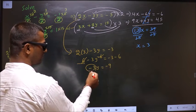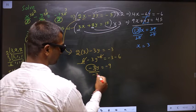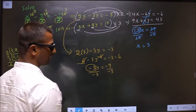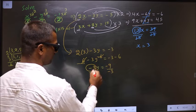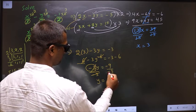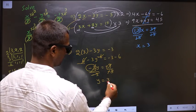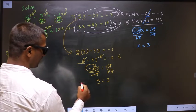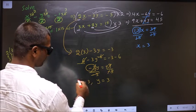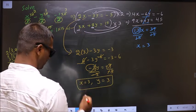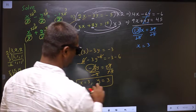So now to get y, I should remove minus 3. So divide by minus 3 on both sides. This cancels out. I get y equal to 3. Earlier I got x equal to 3.